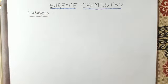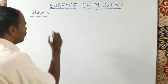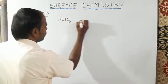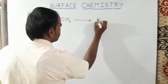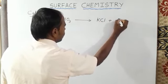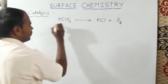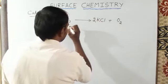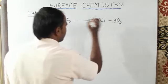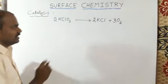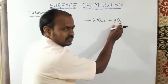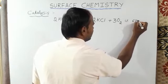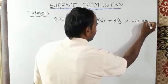For example, decomposition of potassium chlorate, KClO3. Potassium chlorate decomposes to give 2KCl plus 3O2. The decomposition of potassium chlorate gives dioxygen at a temperature of 673 Kelvin to 873 Kelvin.